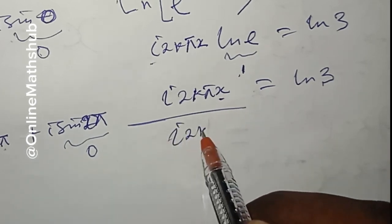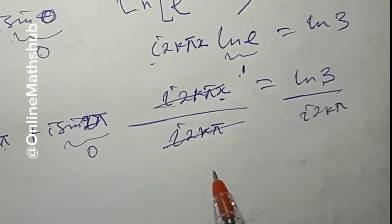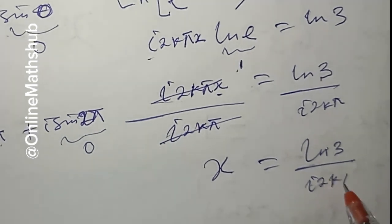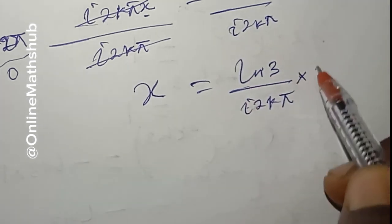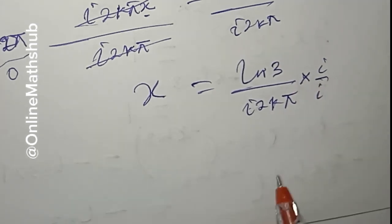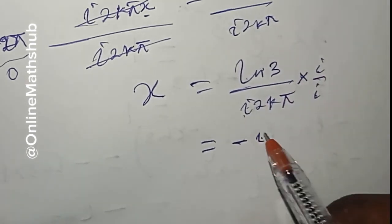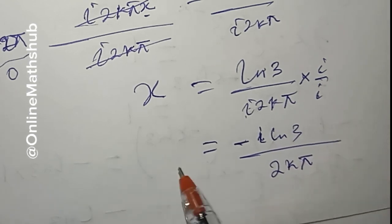To isolate x, we divide both sides by i·2kπ, giving x = ln(3) / (i·2kπ). To remove i from the denominator, we multiply numerator and denominator by i: i·i = −1, so the minus sign comes to the numerator. This gives us x = −i·ln(3) / (2kπ).